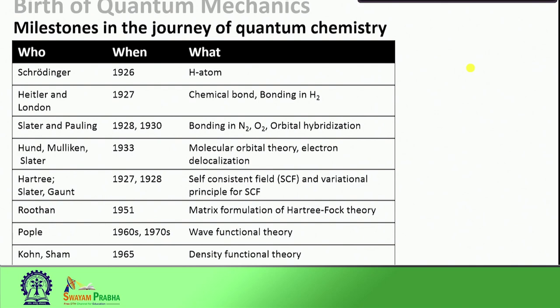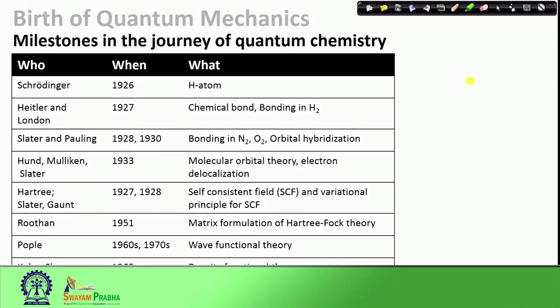Soon after, Hartree, Slater and Gaunt suggested the very useful self-consistent field and variational principle for self-consistent field. In 1951 Roothaan provided a matrix formulation of Hartree-Fock theory, which made this theory very popular because around that time we were witnessing rapid progress in computers, and with the matrix formulation it was becoming easier to solve complex quantum mechanical problems computationally. Soon after, Pople, Hückel and Slater in the 1960s and 70s put forward two very important theories - wave functional theories and density functional theories - which are now among the most commonly used quantum chemical strategies to deal with large molecular systems.